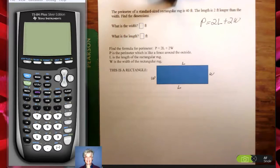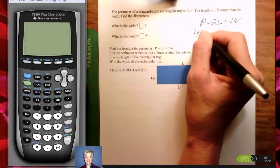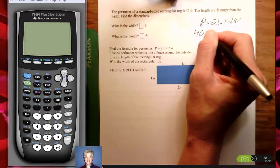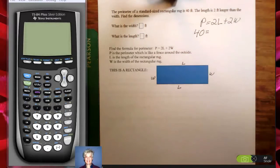Notice you're given what the perimeter is right away. The perimeter of a standard sized rectangular rug is 40 feet. So we start out knowing the perimeter. The length is 2 feet longer than the width. Find the dimensions and we have to find the width and the length. So I have to find L and W.